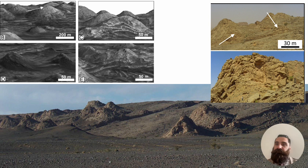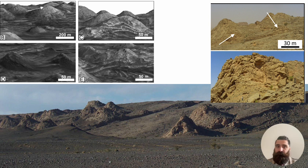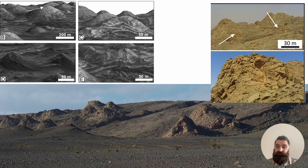We were interested in these mounds because at first glance their shape really looks like the one of Martian mounds — comparable in size, with lamination or layering. In sedimentary environments on our planet, such stratification is due to water or linked to aqueous environments.